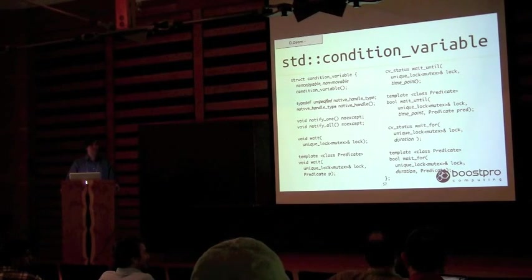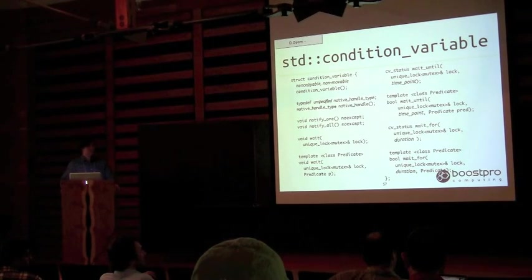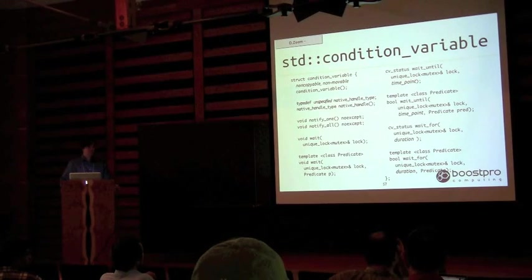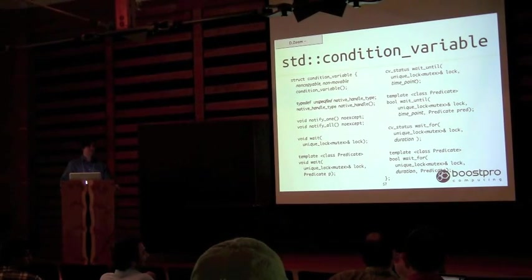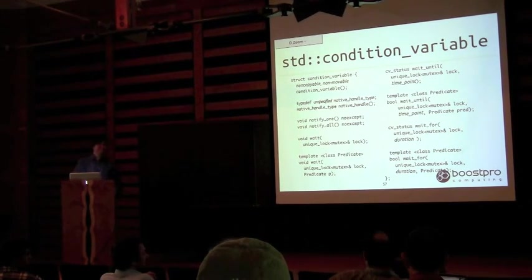One thing not mentioned here is spurious wake-ups on condition variable wait. You could wake up and the condition isn't satisfied. Your code correctly handles it by using the while-loop spin. The predicate form of wait handles this automatically, which is why it's so useful.